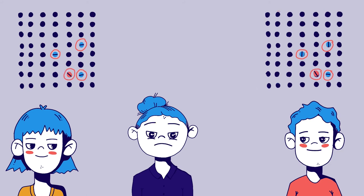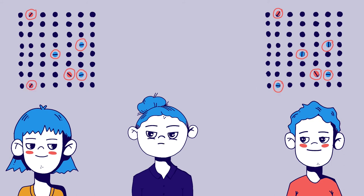Bob makes as many mistakes as Eve, but his are simply deleted. Before Alice and Bob build their key, they compare individual digits — they don't use them for the key afterwards. But if they don't match, they know that someone has been listening.